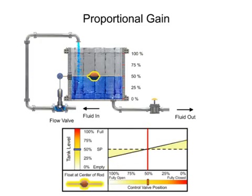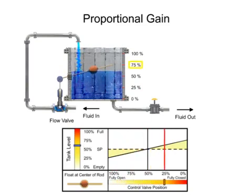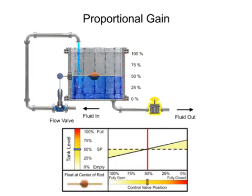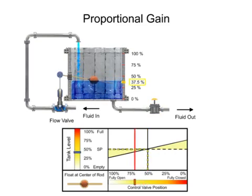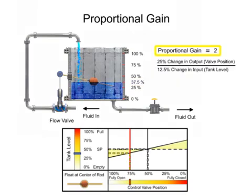Positioning the float to the midpoint of the bar increases the gain. The valve fully opens when the level drops to 25% and fully closes when the level rises to 75%. Opening the drain valve increases the load demand, which causes the tank level to drop by 12.5%, or 37.5% full. The float drops and the valve opens 25%, which allows more fluid flow to enter the tank. A gain of 2 is demonstrated since the 12.5% change of tank level resulted in a 25% change of valve position.